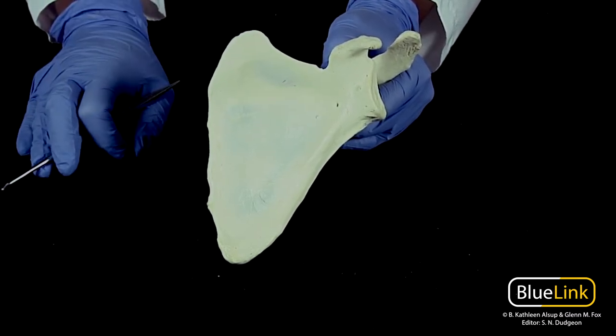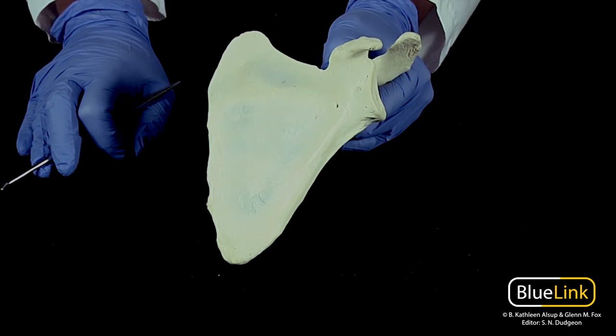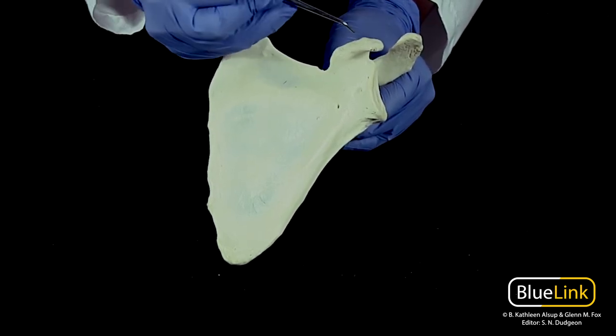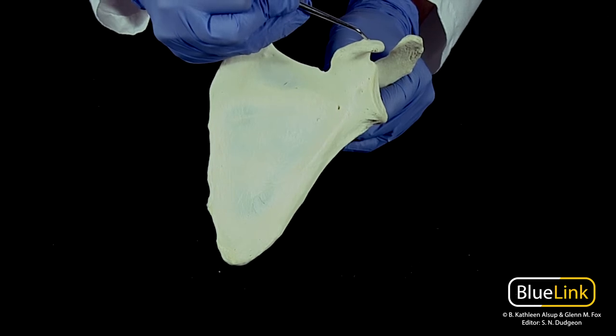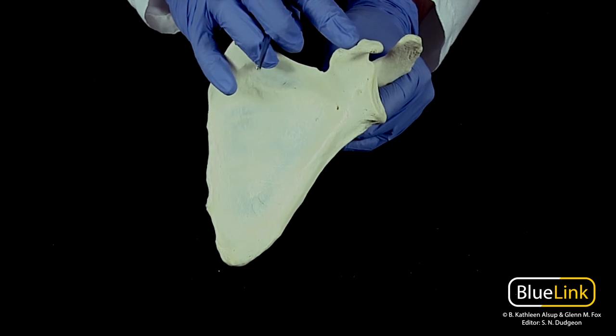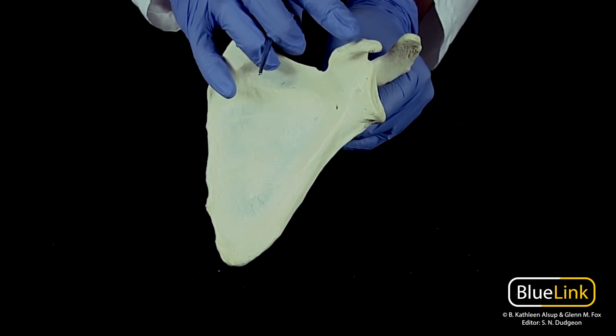It's also an important attachment site for ligaments that are associated with the shoulder joint and acromioclavicular joint. Your coracoacromial and coracoclavicular ligaments will attach here. So very important in terms of the anatomy of the shoulder joint.